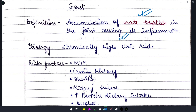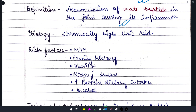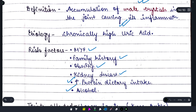If uric acid is always elevated, there are more chances of gout. Risk factors include: males are at higher risk; family history of gout also contributes. Obesity and kidney disease are also risk factors. Increased protein dietary intake can increase uric acid formation, contributing to gout. Alcohol intake also increases the risk of gout.